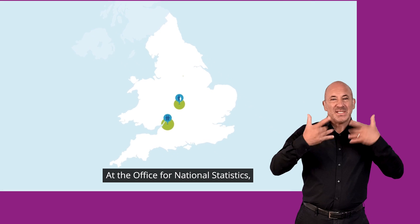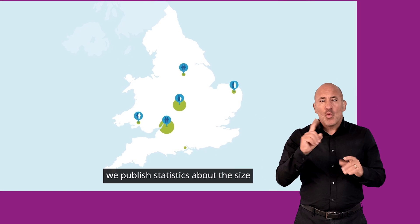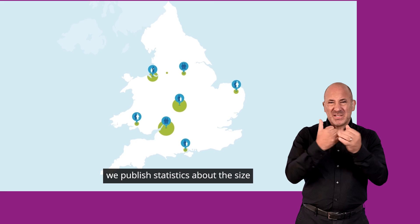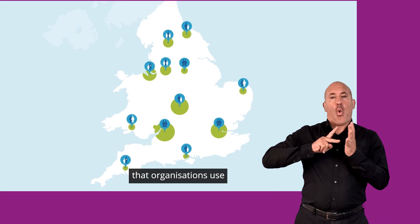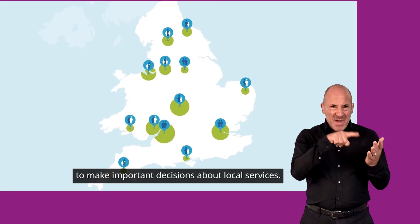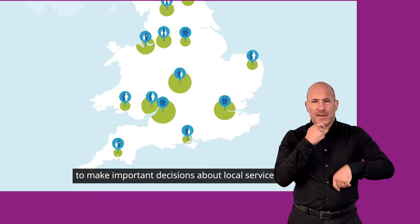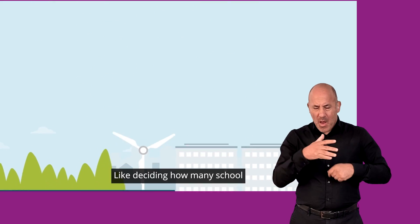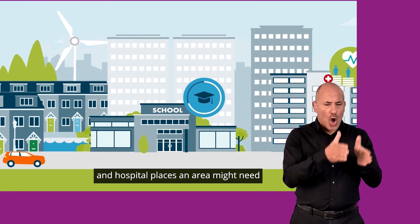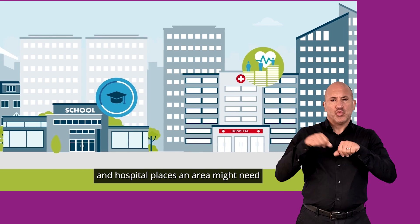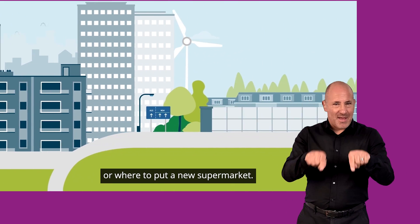At the Office for National Statistics, we publish statistics about the size and structure of the population that organisations use to make important decisions about local services, like deciding how many school and hospital places an area might need, or where to put a new supermarket.